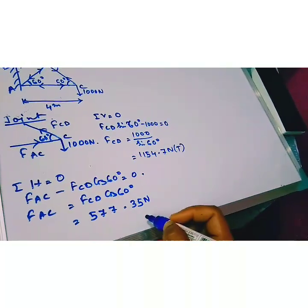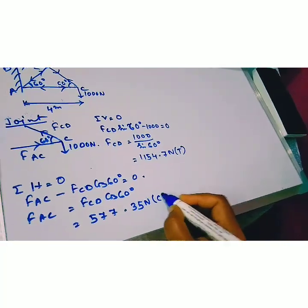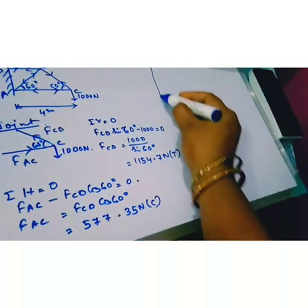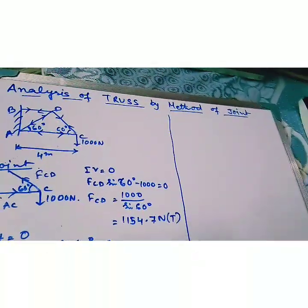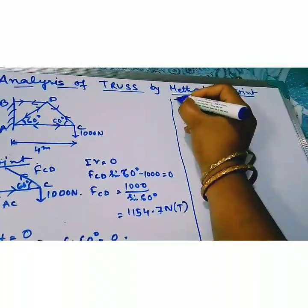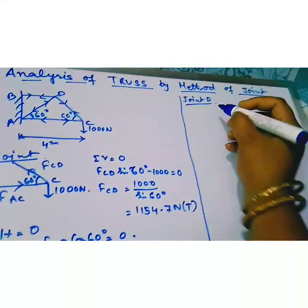It is also positive. We assume the member is compression member. Now we consider the joint D, equilibrium of joint D.